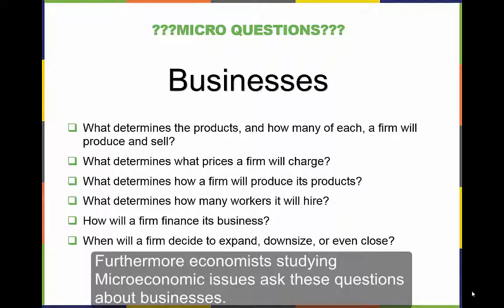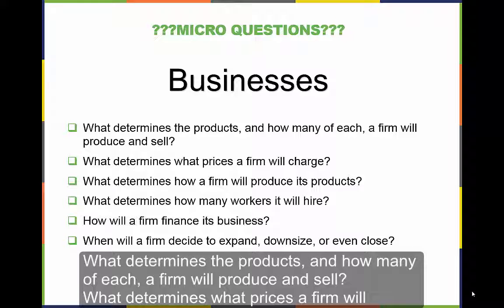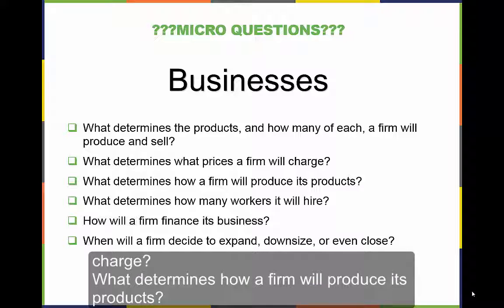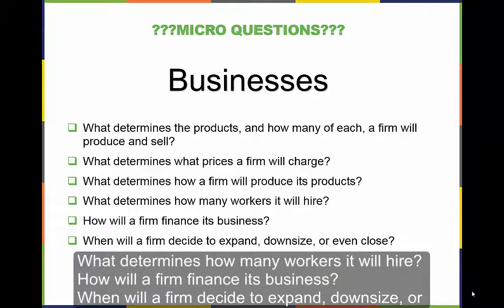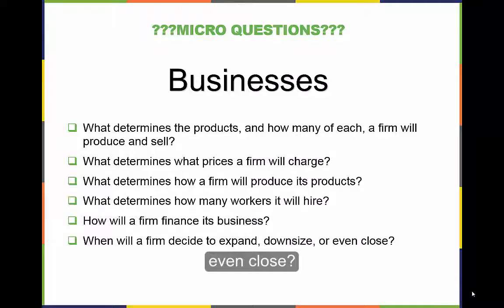Furthermore, economists studying microeconomic issues ask these questions about businesses. What determines the products, and how many of each a firm will produce and sell? What determines what prices a firm will charge? What determines how a firm will produce its products? What determines how many workers it will hire? How will a firm finance its business? When will a firm decide to expand, downsize, or even close?